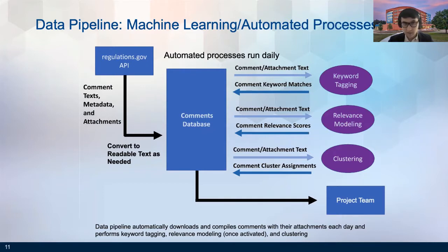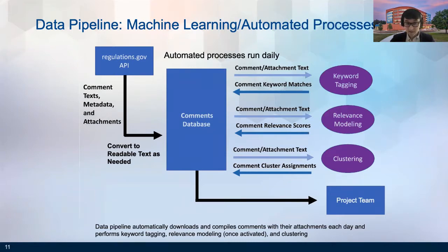First, in the upper left-hand corner, we created a data pipeline to ingest public comments, metadata, and attachments automatically from regulations.gov every night. We've recently updated this process to allow project team members to run the automated process at any point. The ingestion process also extracts text from public comment submissions and attachments. Our process can extract text from Word documents, Excel spreadsheets, emails, and PDFs, among other file types. If the text is not machine-readable, the pipeline will also convert it to machine-readable text.